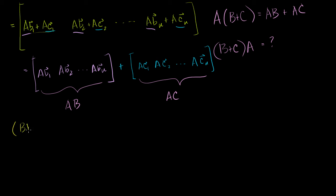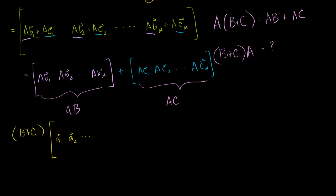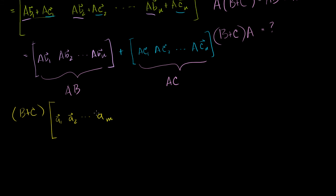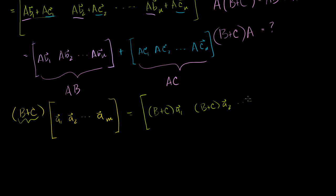Let's take B plus C times A, and I'll write A as its column vectors: A1, A2, all the way to AM, since A has M columns. By the definition of matrix products, this is going to be equal to the matrix where B plus C — which is just a matrix — is multiplied by each of the column vectors of A. So it equals B plus C times A1, B plus C times A2, all the way to B plus C times AN.